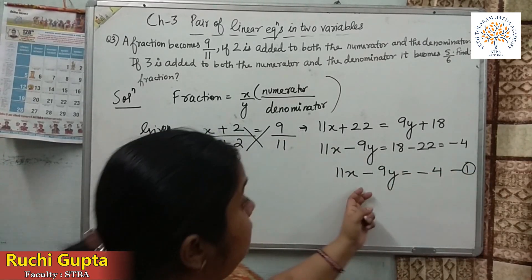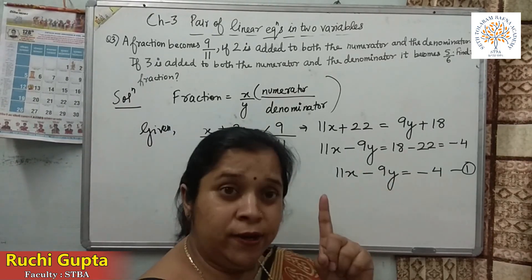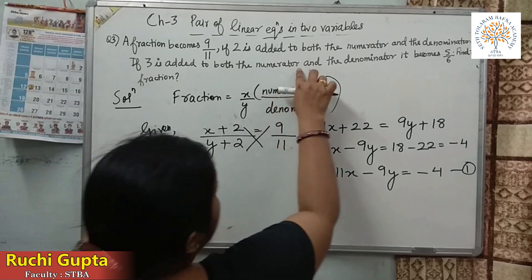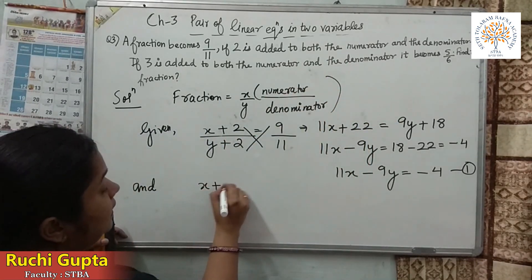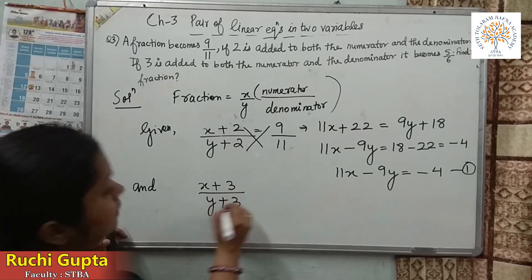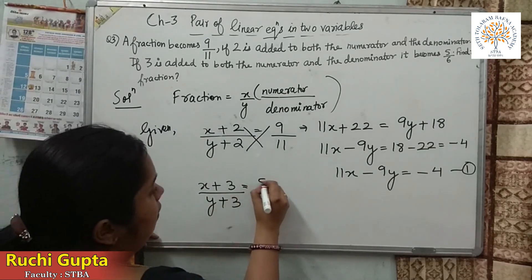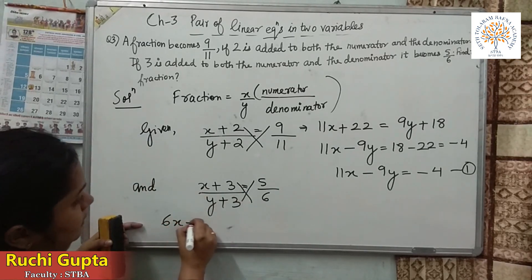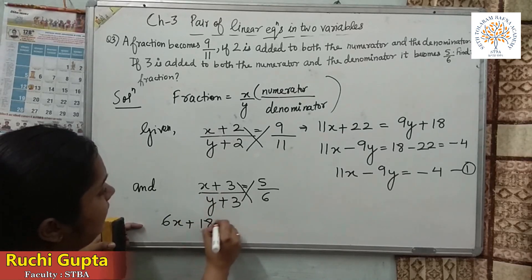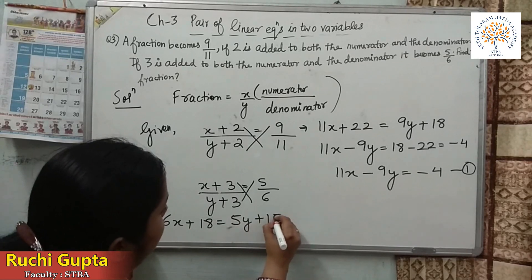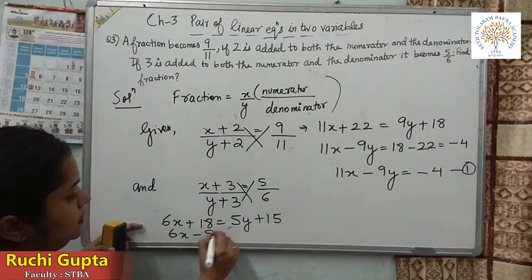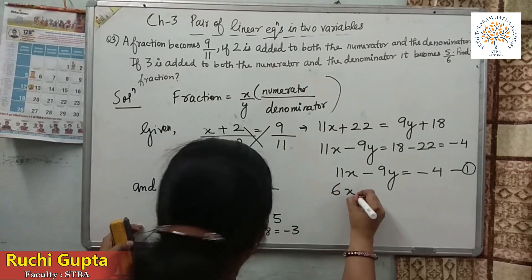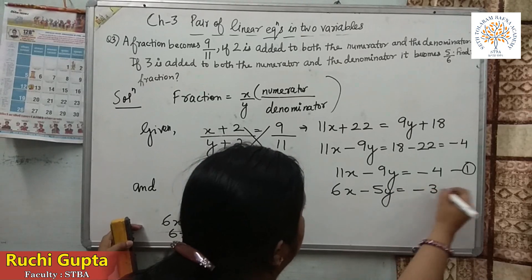We need a second equation to solve two unknown variables. Second condition: if 3 is added to both numerator and denominator, the fraction becomes 5 upon 6. So (X+3)/(Y+3) equals 5/6. Cross-multiplying: 6(X+3) equals 5(Y+3), giving 6X plus 18 equals 5Y plus 15. Rearranging: 6X minus 5Y equals minus 3. This is our second equation.